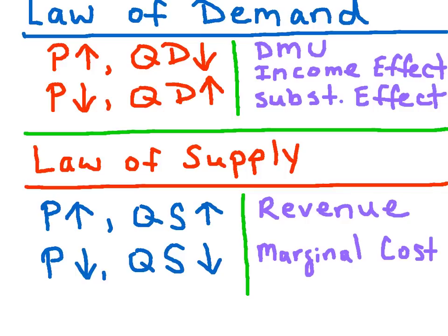This downward sloping demand curve can be explained by diminishing marginal utility, the income effect, and the substitution effect. Diminishing marginal utility, or DMU, means that as we consume additional units of a good, our marginal satisfaction will fall, so we're only going to purchase additional units if the price falls. The income effect means that at lower prices, our income has greater purchasing power and we can purchase more units. The substitution effect means that at higher prices, we start to consider alternatives.